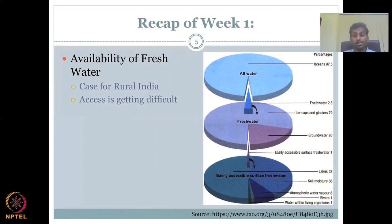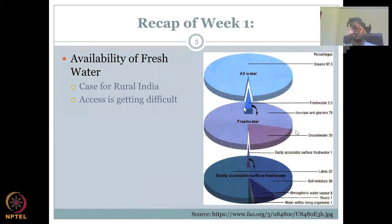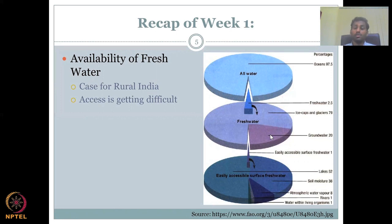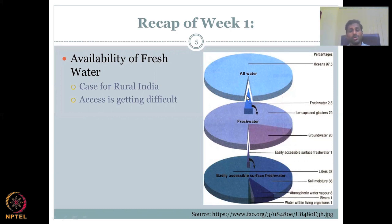Water management is really, really necessary, especially nowadays with climate change extremes of floods and droughts. The composition and availability of freshwater is decreasing day by day. For rural India, of the total water only 2.5% is freshwater, and of that freshwater only about 1% of easily accessible water is available.